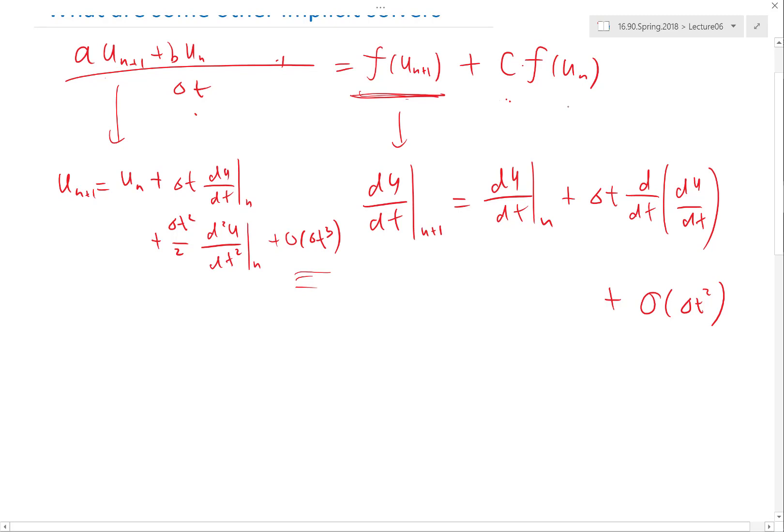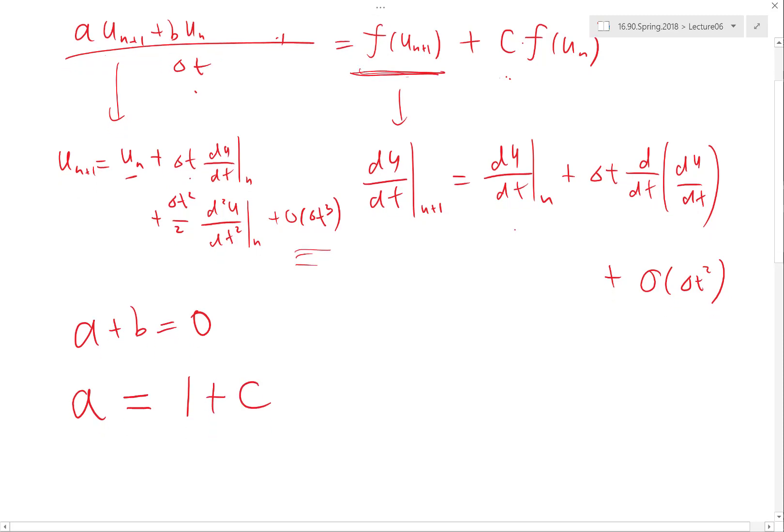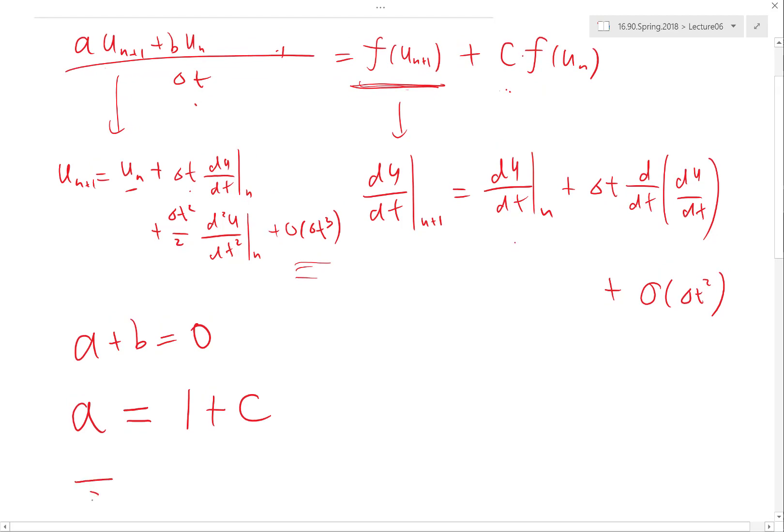What I have is the constant term has to cancel, which means a + b equals zero. On the right hand side there is no constant term. Now the first order term—here I just have a on the left hand side, which has to equal 1 + c on the right hand side. And the second order: I have half of a times delta t, which has to equal what I have on the right hand side—just this particular term, so it's equal to one.